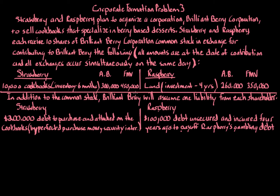Each shareholder gets 50% of the stock, so 50% of $500,000 is $250,000. Strawberry gives up property worth $450,000 but gets $200,000 in liability relief, netting $250,000. Raspberry gives up something worth $350,000 but gets $100,000 liability relief, also netting $250,000. So they're each getting the same value — exactly 50% — which is what we want to see.